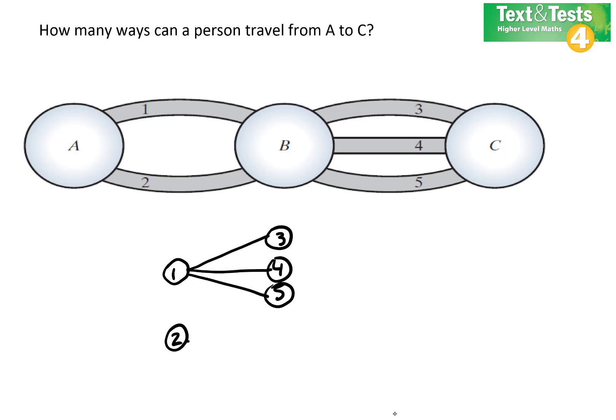But also, if you had taken road 2, you could have then taken road 3, 4, or 5. And we can see when we make out a tree diagram that our options are 6 different choices.